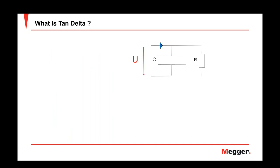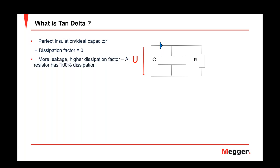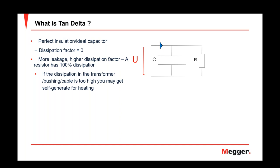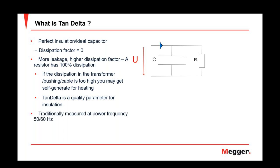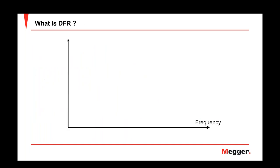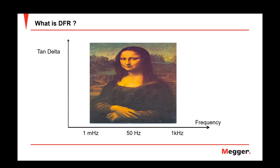A perfect insulation is like an ideal capacitor with a very low dissipation factor. The more leakage, the more dissipation factor, and the worse the insulation. If dissipation in a transformer, bushing, or cable is too high, you may get self-generated heating. So tan delta is a quality parameter for insulation, and traditionally we measure it at 50 Hz. DFR — Dielectric Frequency Response — takes that further: instead of measuring tan delta only at 50 Hz, we measure it across a range of frequencies to complete the picture.